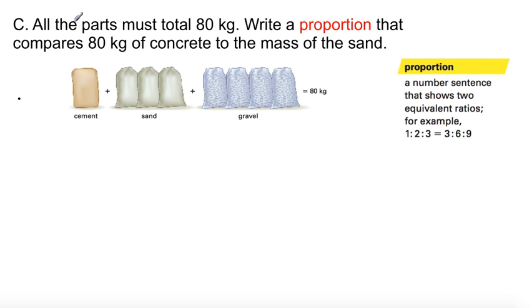Now, all the parts must total 80 kilograms. Write a proportion that compares 80 kilograms of concrete to the mass of the sand. Proportion here. A number sentence that shows two equivalent ratios. For example, one to two to three equals three to six to nine. Well, if there are eight parts here, equal parts, and we have a total of 80 kilograms, I think it's safe to assume that every bag is 10 kilograms.